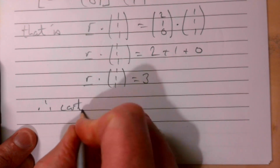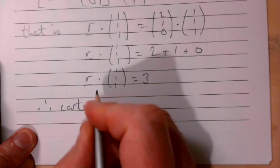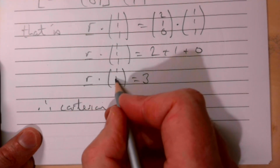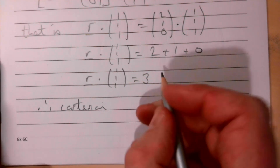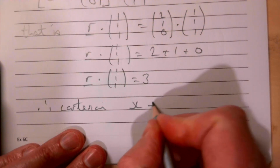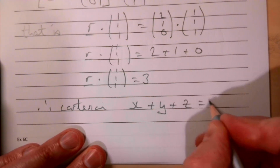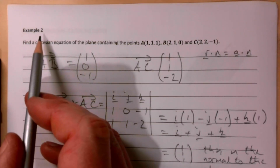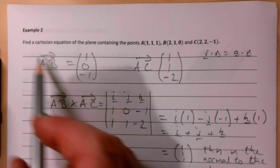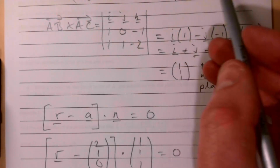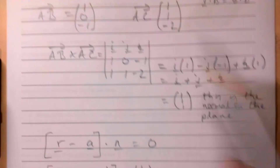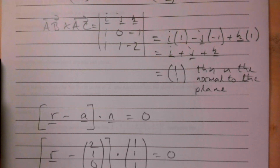The Cartesian equation is simply x + y + z = 3. Note that for example 2, even though it comes after the vector equation of the plane, the best approach is to work out the scalar form this way — it's a much easier route to the Cartesian equation of the plane.